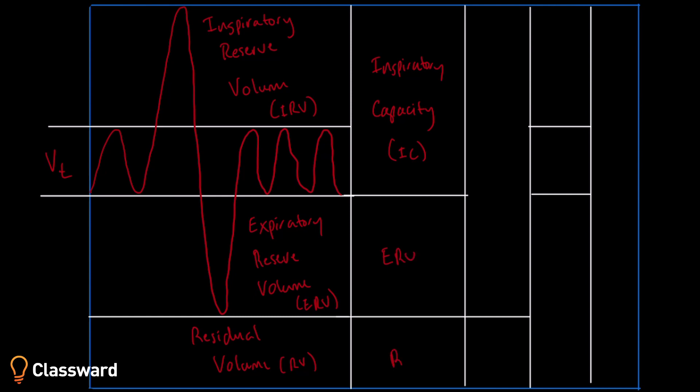And we're going to go to vital capacity next. This is the total amount of air that is exhaled after that max inhalation. This is somewhere around 4,500 to 5,000 milliliters, but again, like everything, it's going to vary depending on the patient's health status, their age, things like that.